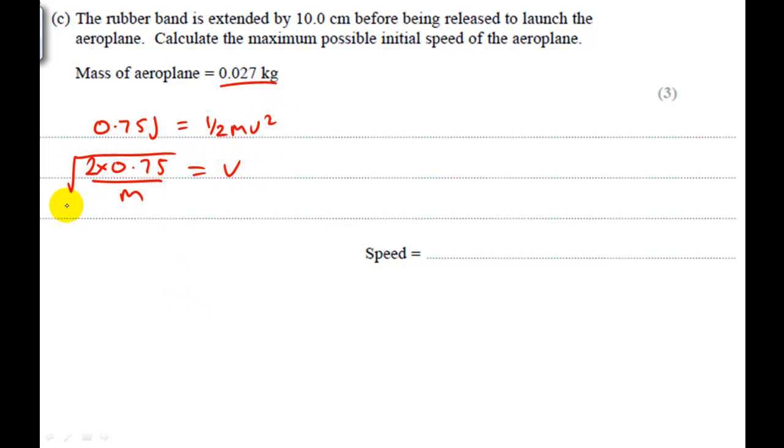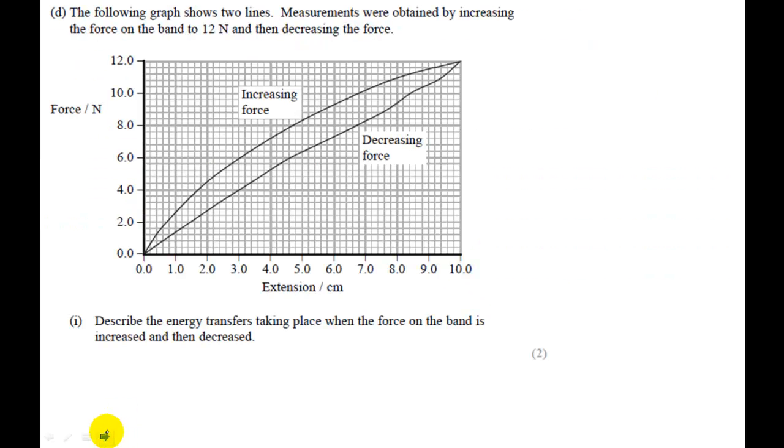So I've just got v is equal to root 2 times 0.75 over m. And m is 0.027. And plugging the numbers into the calculator gives us 7.45 meters per second. And I'll just round that up to 7.5 meters per second for my final answer. Let's move on to the next question.